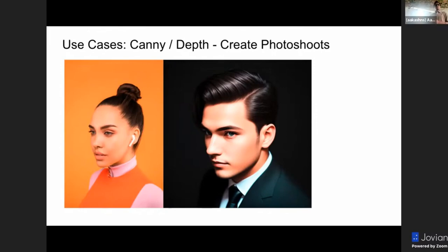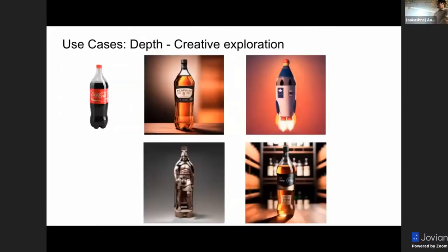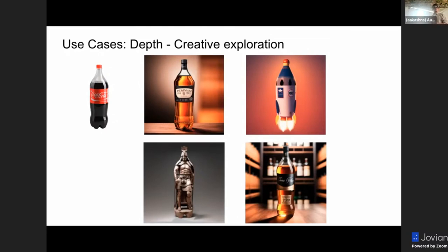I'm not going into the details of prompt engineering and the model base, but everything is going to be embedded within the PNG file itself. That's another advantage of using automatic1111 to generate images, because all the extra metadata in terms of how this image got created is already embedded in the PNG or JPG file itself. Another interesting use case for depth that I found is that it allows for a lot of creative explorations. For example, using a Coke bottle, I was able to generate a whiskey bottle, a cartoon rocket, and a steel Roman figurine. As you can see, it's very much holding the shape just like a Coke bottle.